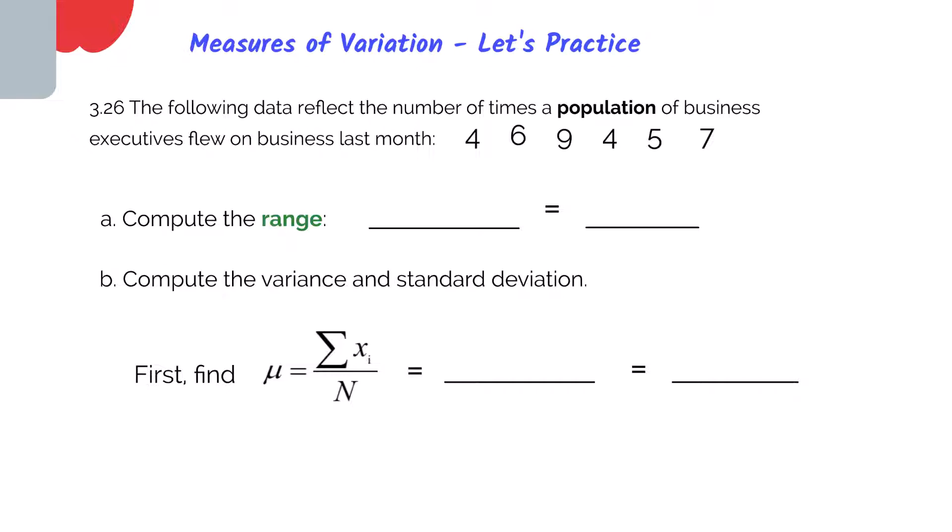So to compute the range, we'll take the largest number and subtract the smallest number. So looking at our data set here, we can see that the largest number is nine and the smallest number is four. So when I subtract nine minus four, we get a range of five.